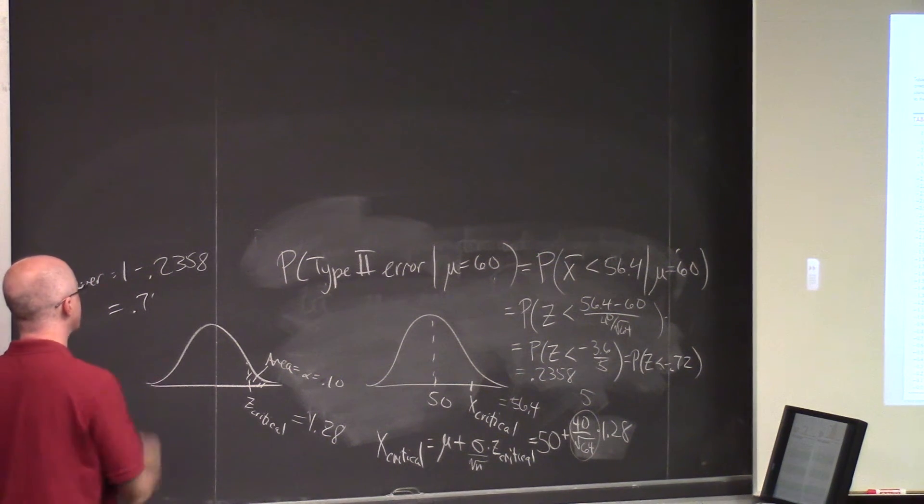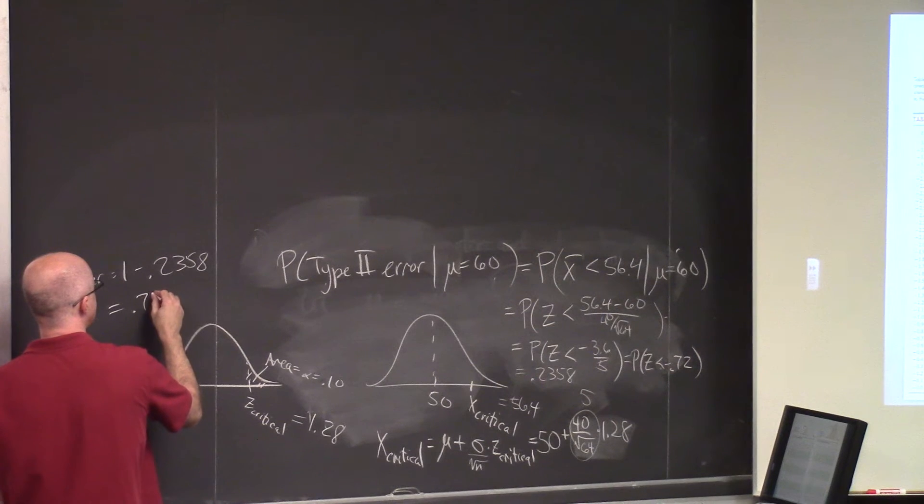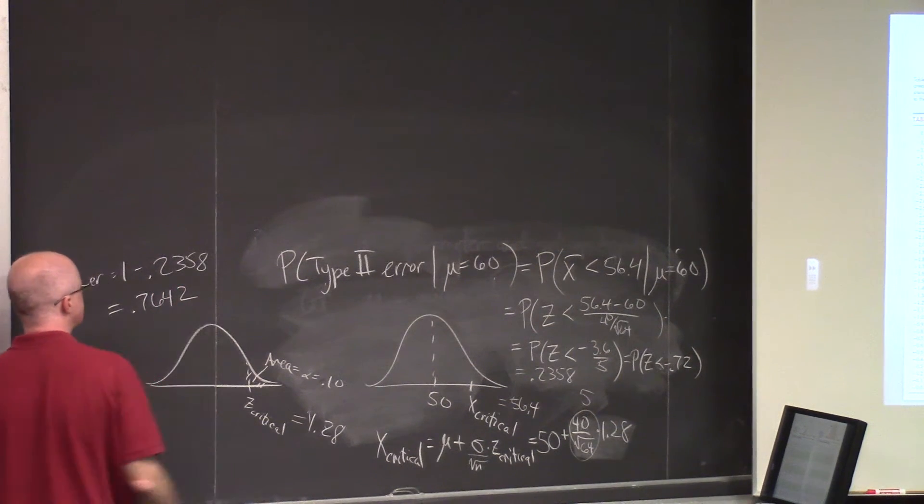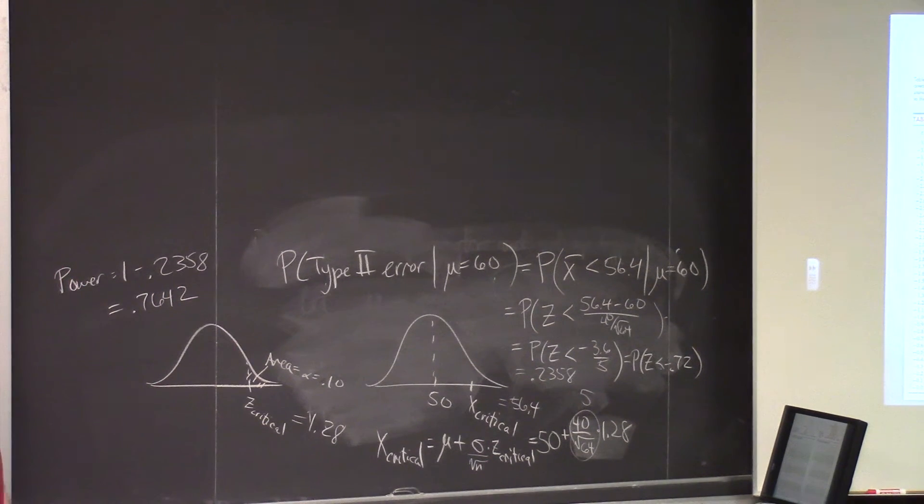Reject the null when this alternative is true. So it's 1 minus the probability of the type 2 error. 0.7642 is the answer. That would be Paul.